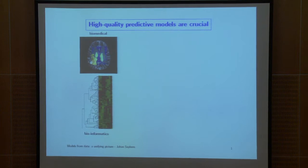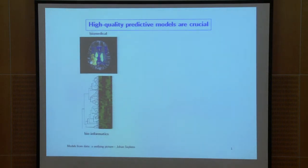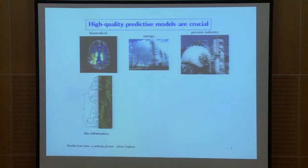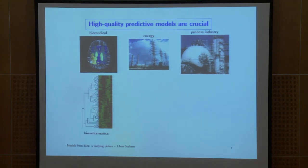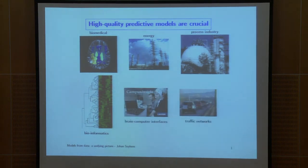What we see in a lot of different application areas is that they are becoming more and more critically dependent on high-quality predictive models. Often these data are in very high-dimensional input spaces — for example in bioinformatics or brain tumor recognition. In other applications the complexity is in the other direction, where you have a large number of data points and you would like a high-quality predictive model, as in complex networks or brain-machine intelligence.